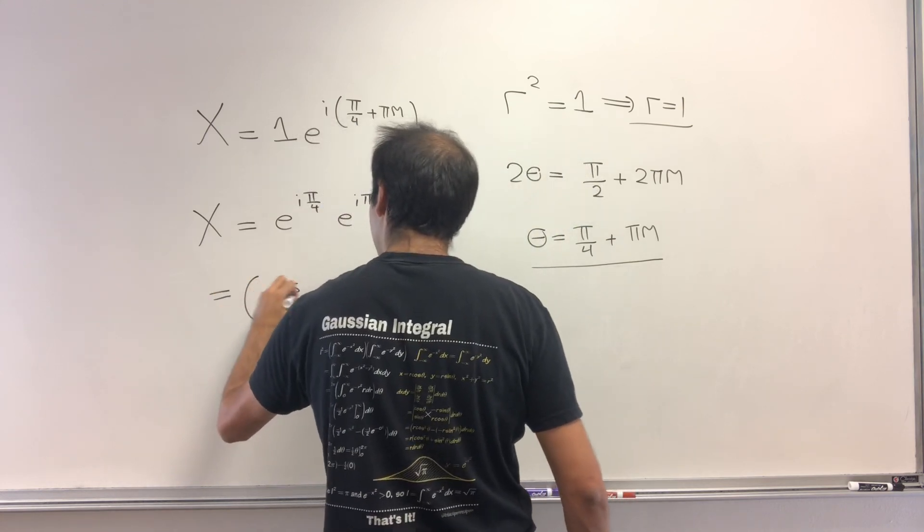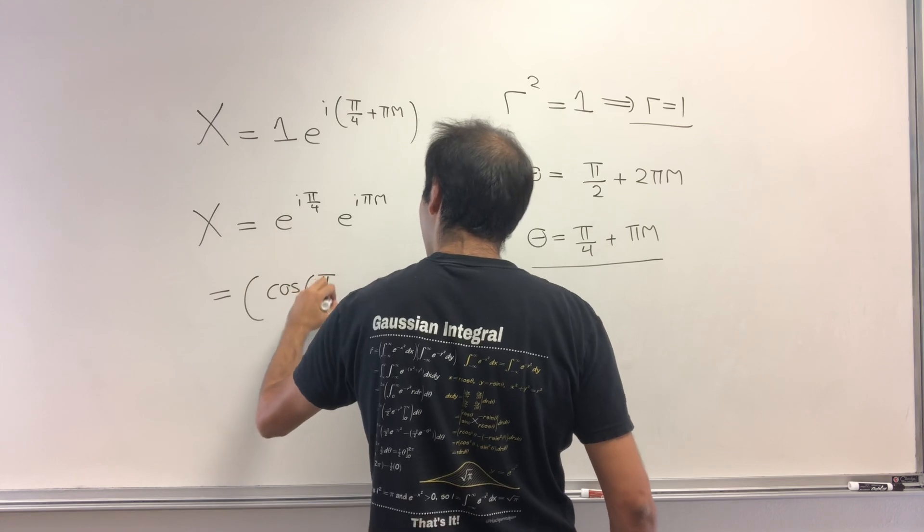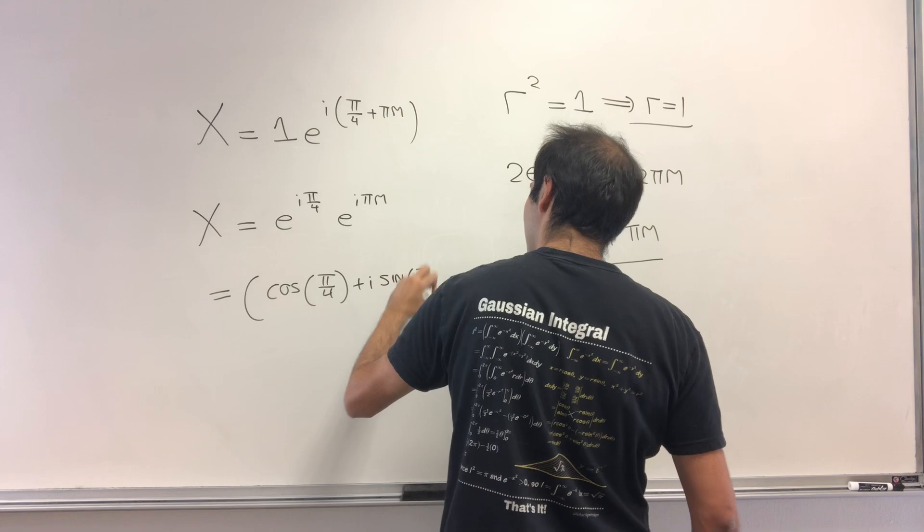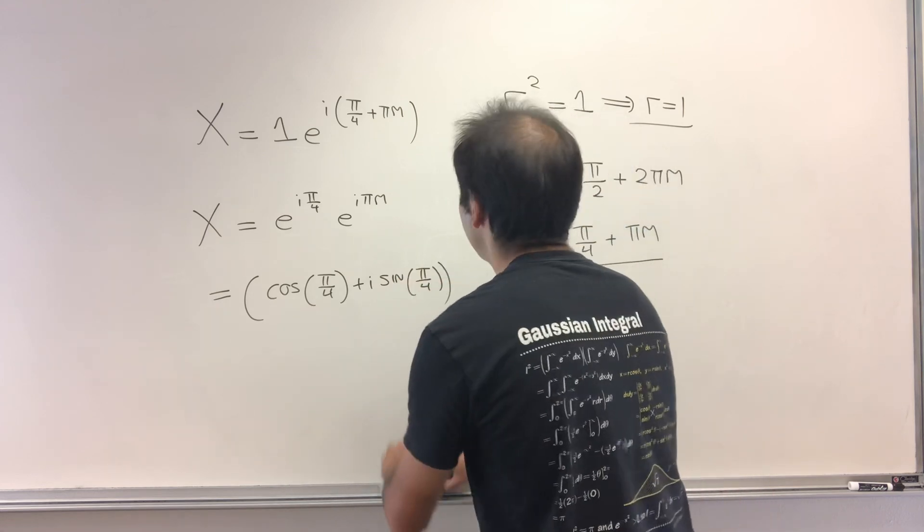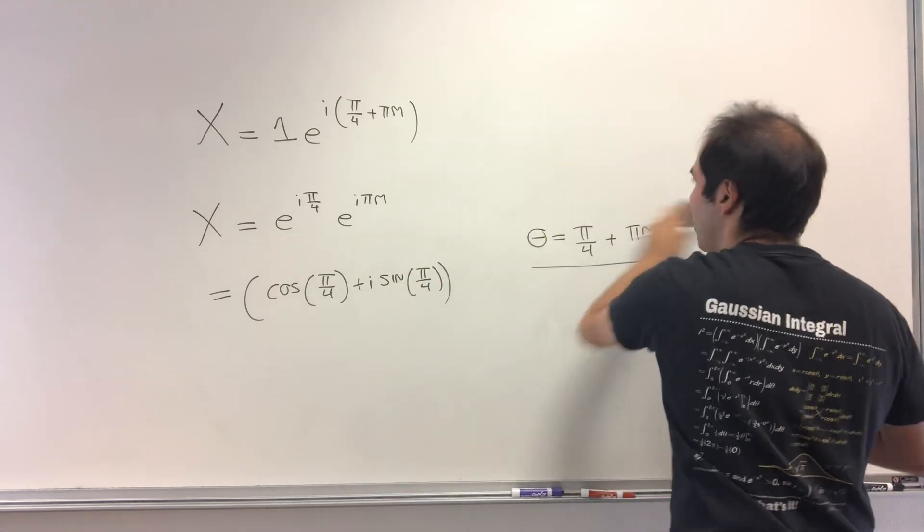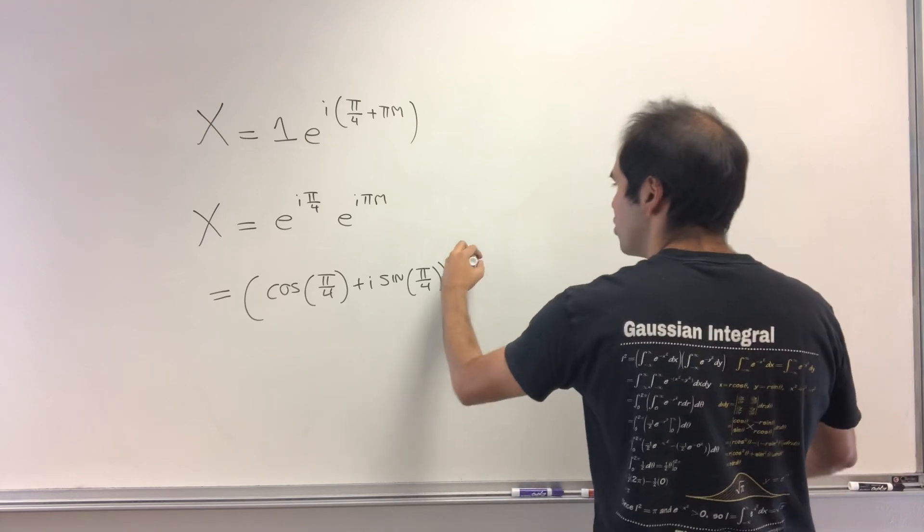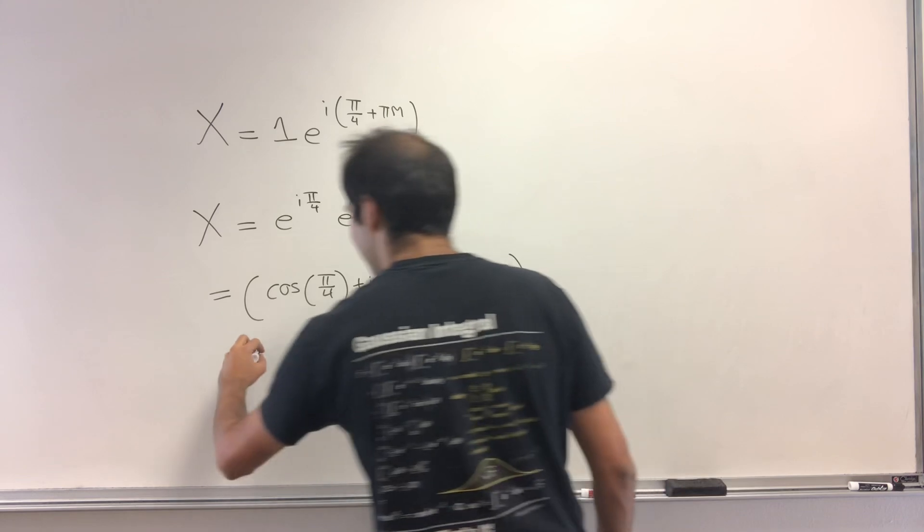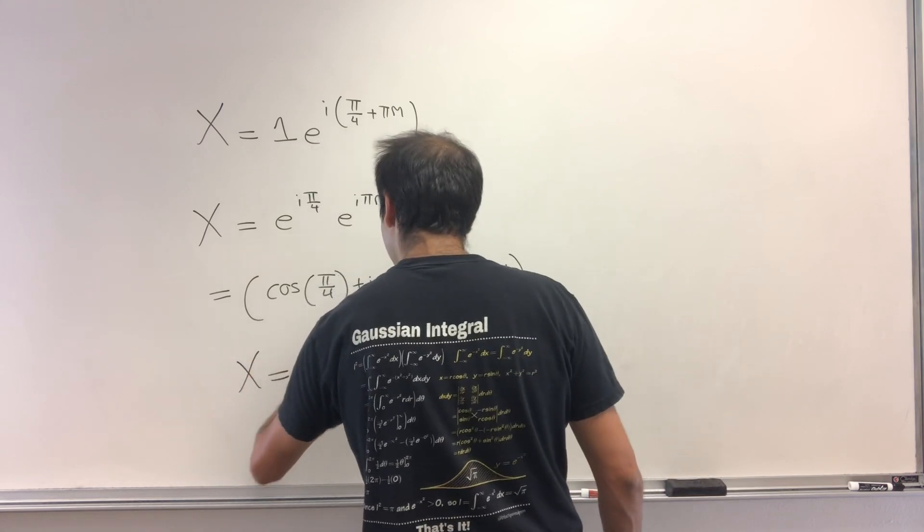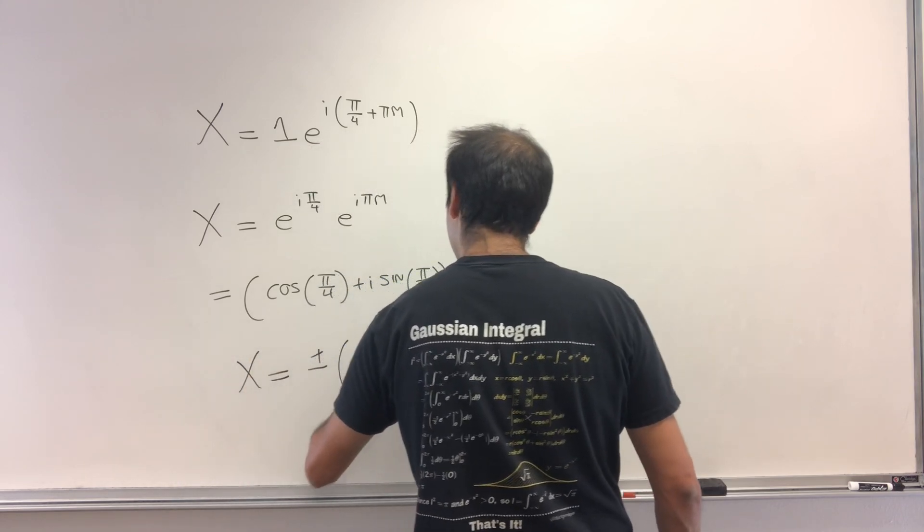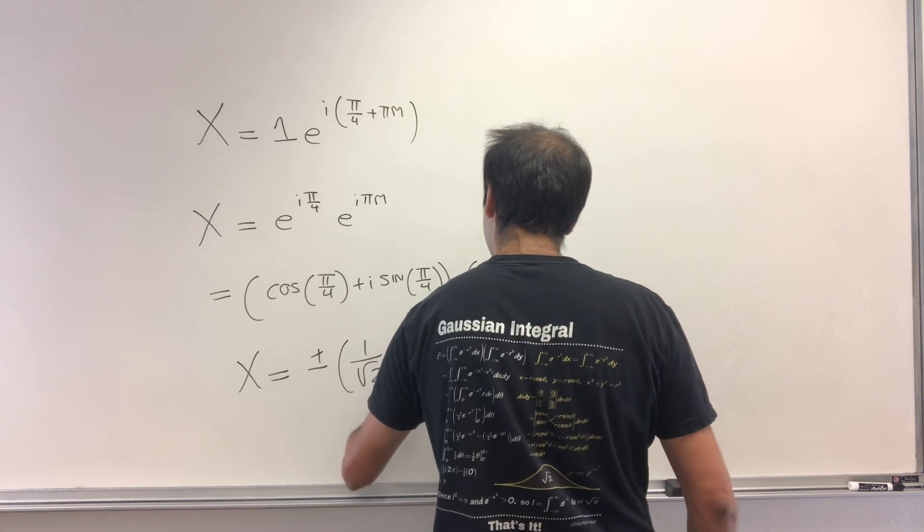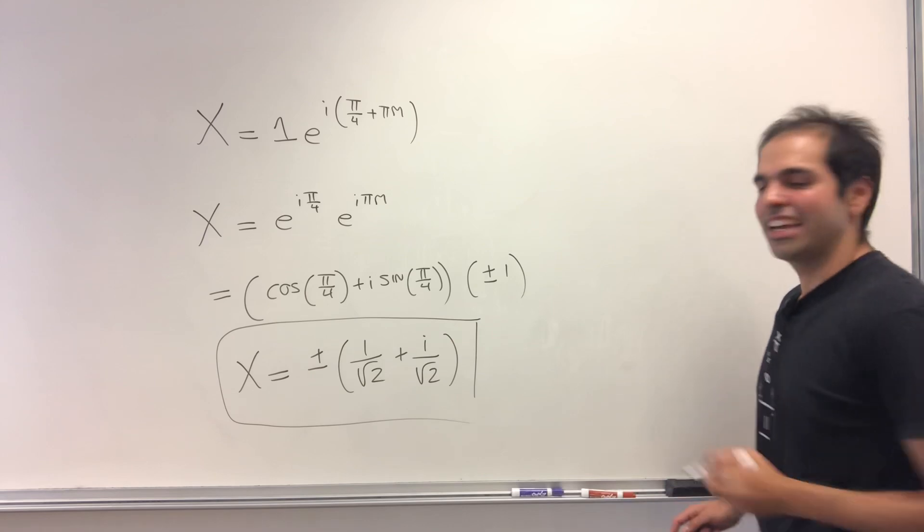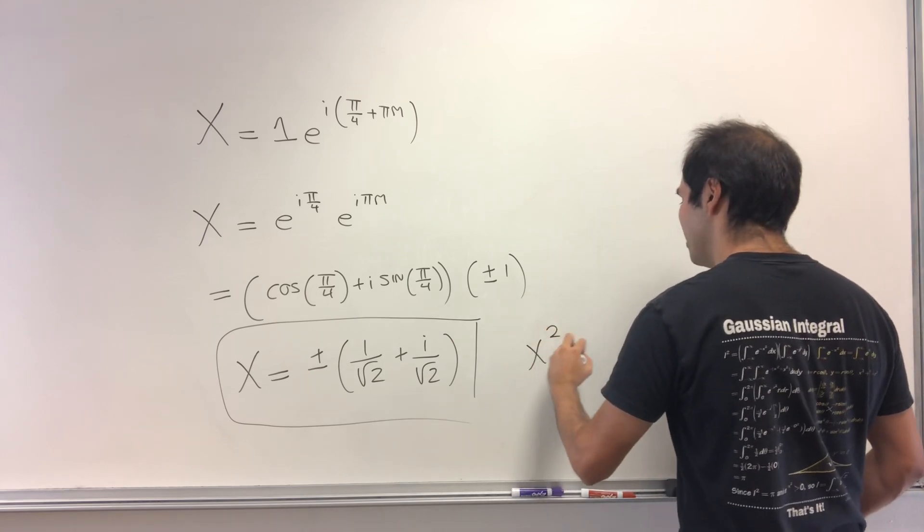This becomes cos(π/4) + i·sin(π/4), times cos(πm) + i·sin(πm), which is just ±1. So we get x is basically ±(1/√2 + i/√2). And those are the solutions of x² = i.